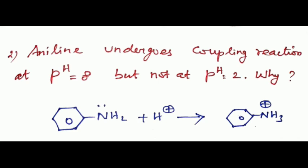Question two: aniline undergoes coupling reaction at pH 8 but not at pH 2. At pH 2, the solution is more acidic — hydrogen ions attack aniline so aniline becomes protonated, forming the anilinium ion. The anilinium ion acts as an electron-withdrawing group, but the substrate must have electron-releasing groups, so coupling does not occur.